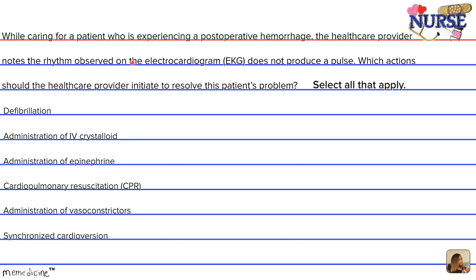Let's first figure out what the patient is experiencing. The rhythm on the electrocardiogram does not produce a pulse, so the patient is experiencing pulseless electrical activity, or PEA. PEA is not a shockable rhythm. Therefore, defibrillation and synchronized cardioversion would not be appropriate courses of action. High quality CPR should be started immediately. An important treatment for PEA is to address the underlying cause, which in this patient is hypovolemia due to postoperative bleeding or postoperative hemorrhaging.